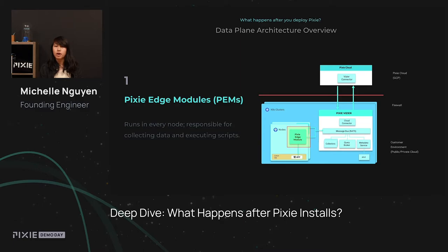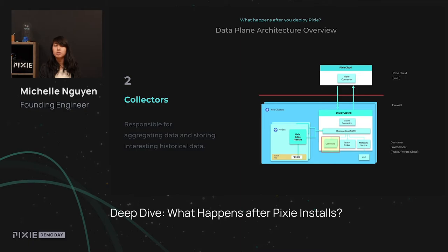The PEMs are also responsible for executing any queries about that data. Obviously, we collect a lot of data using our PEMs, but not all of it is very interesting. The PEMs decide which data may be significant for the user to query later on and ship it to the collectors for later storage. The collectors are responsible for keeping this data, but also storing any interesting historical trends so that you can see how your cluster performs over time.